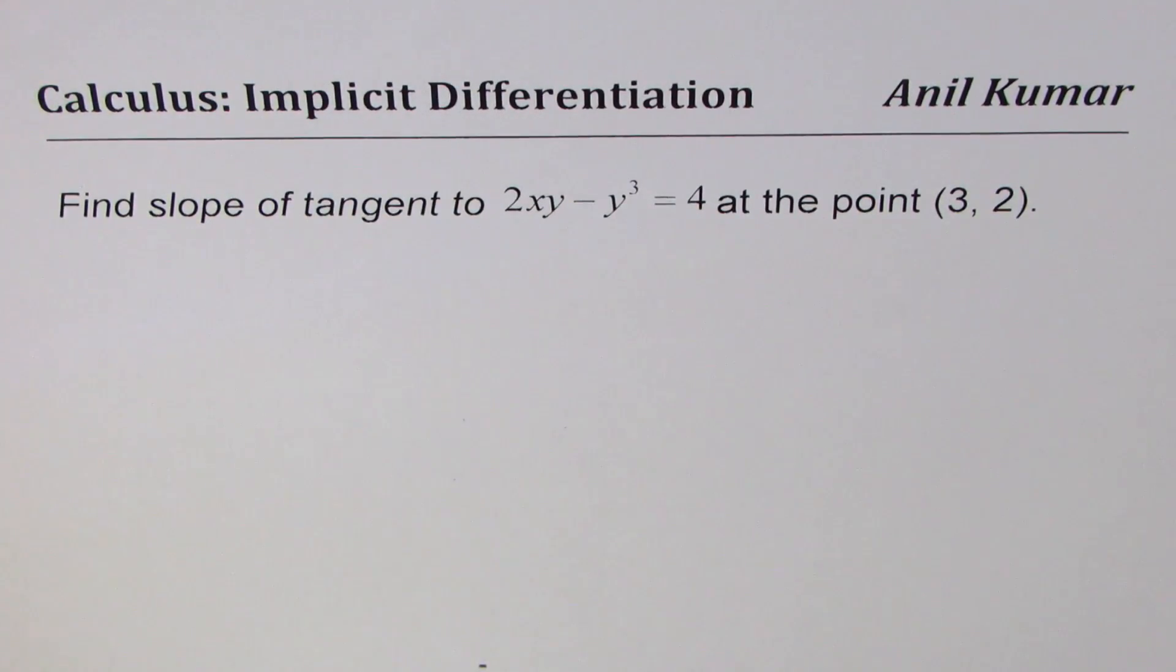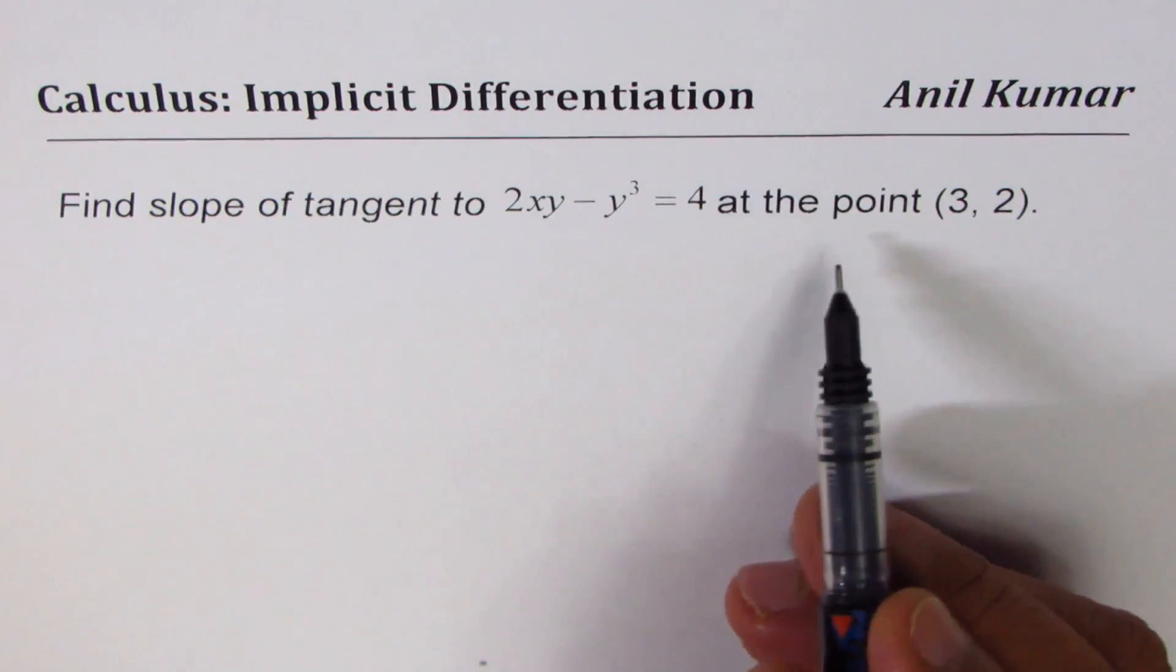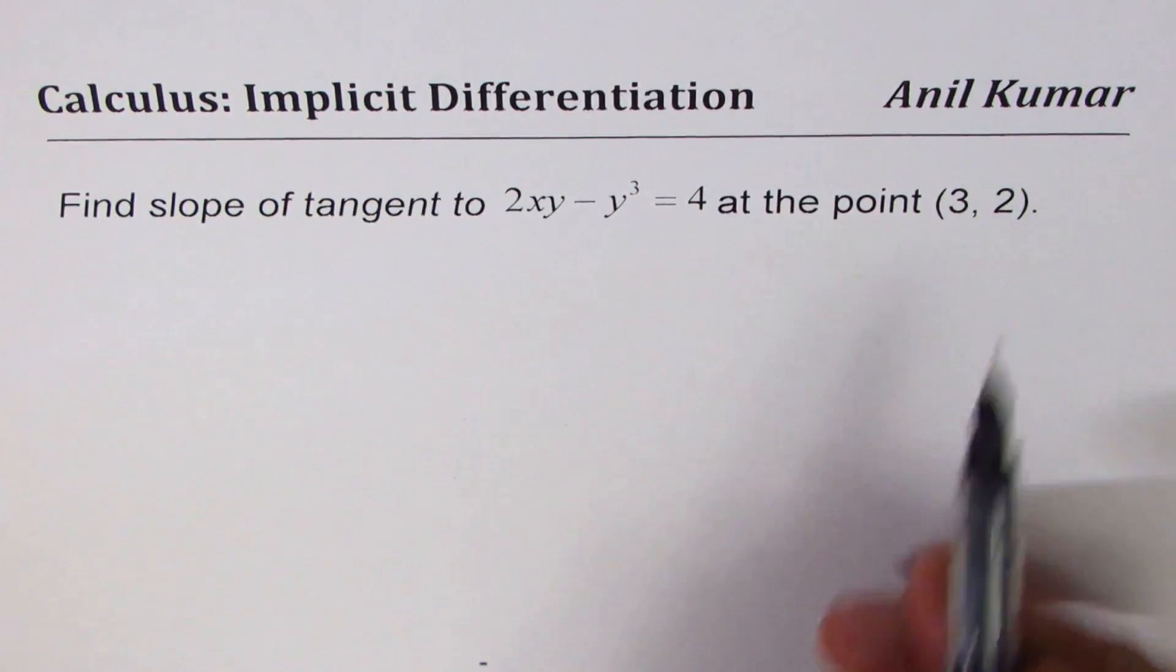I am Anil Kumar and in this video we will learn techniques for implicit differentiation. The question here is: find the slope of the tangent to 2xy - y³ = 4 at the point (3, 2).